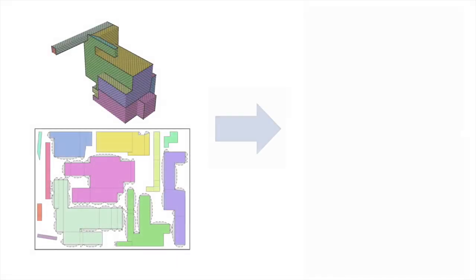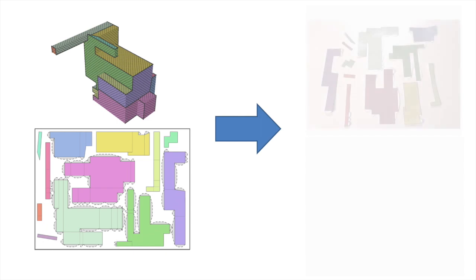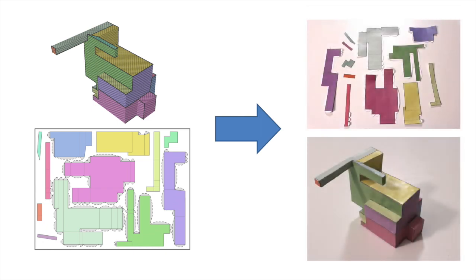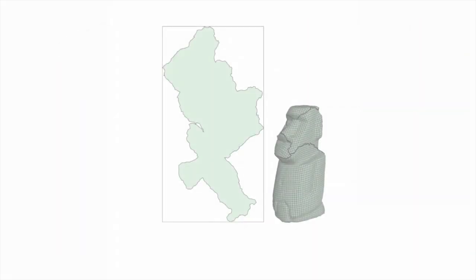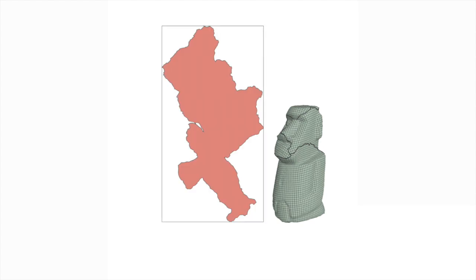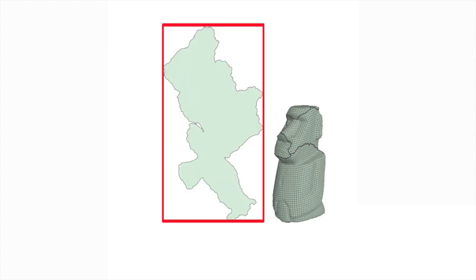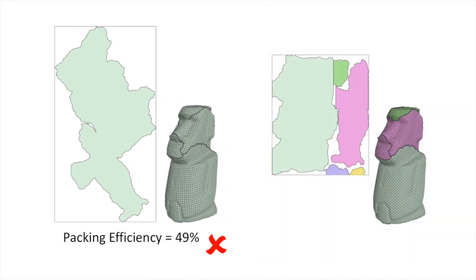Tight packing is similarly used to arrange and cut out 2D panels for fabrication from sheet materials. Packing efficiency, or the ratio between the areas of the packed atlas and its bounding rectangle, significantly impacts these downstream applications. Low packing efficiency leads to waste of memory and disk space in graphics settings and waste of material in fabrication.